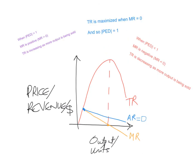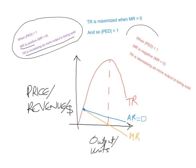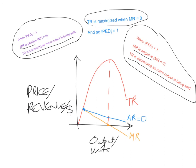To sum up: when price elasticity of demand is greater than one — meaning demand is elastic — marginal revenue is positive and total revenue is increasing as more output is sold. When price elasticity of demand is less than one — meaning demand is inelastic — marginal revenue is negative and total revenue is decreasing as more output is sold. Total revenue is maximized when marginal revenue equals zero, which happens when price elasticity of demand is equal to one.